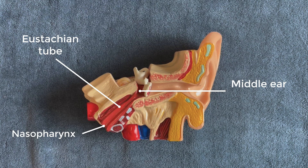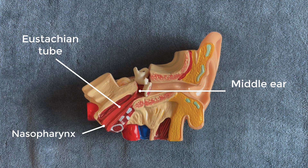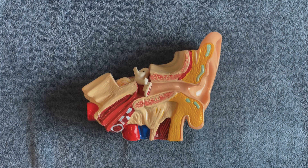The Eustachian tube is a channel or tube that connects the middle ear to the nasopharynx. The tube consists of a bony portion and a cartilaginous portion.